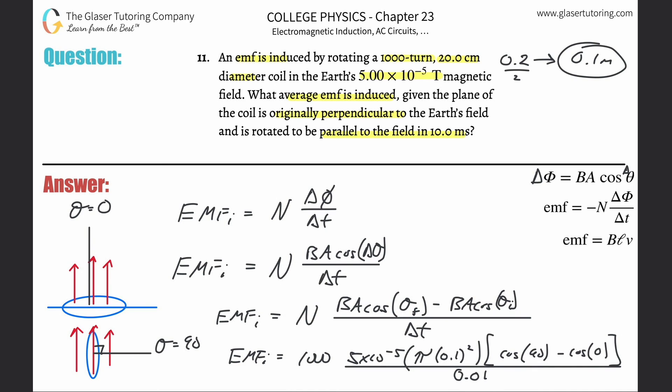Now all you've got to do is plug it on in. So this is 1,000 times 5 times 10 to the minus 5th times pi times 0.1 squared times then, basically it's just going to be cosine of 0, which is just 1. It's negative, but I'm taking the absolute value, so don't worry about it, and then divide that now by 0.01.